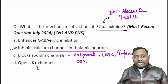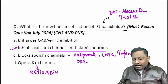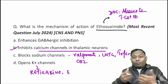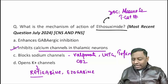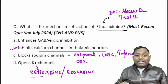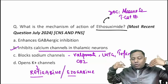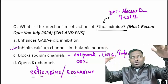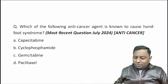Regarding potassium channel openers: I had a friend named Retigabine — also known as ezogabine. She would easily open the door for group study. Retigabine/ezogabine is a single drug with two names, and it opens potassium channels, allowing potassium to flow out. When potassium goes out, there is hyperpolarization of the neuron. So the correct answer for this question is B.